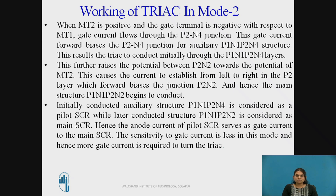Hence the main structure P1, N1, P2, N2 begins to conduct. The previously conducting structure was P1, N1, P2, N4, and after that P1, N1, P2, N2 begins to conduct and is considered the main SCR. The anode current of the pilot SCR serves as gate current to the main SCR. The sensitivity to gate current is less in this mode, and hence more gate current is required to turn on the TRIAC.